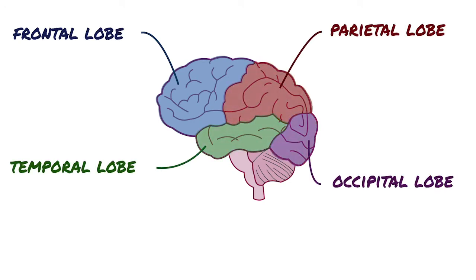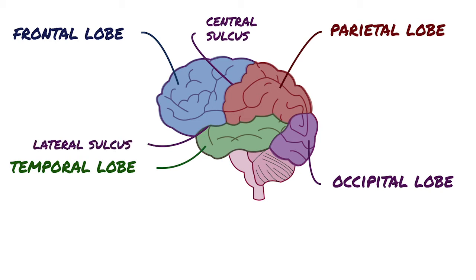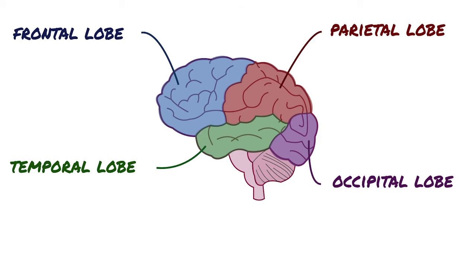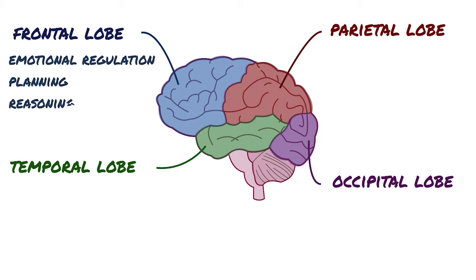The frontal lobe is separated from the parietal lobe by a space called the central sulcus, and from the temporal lobe by the lateral sulcus. The frontal lobe is generally where higher executive functions, including emotional regulation, planning, reasoning, and problem solving occur.